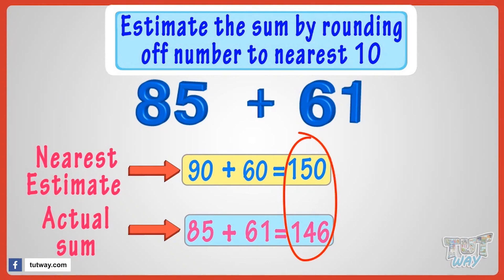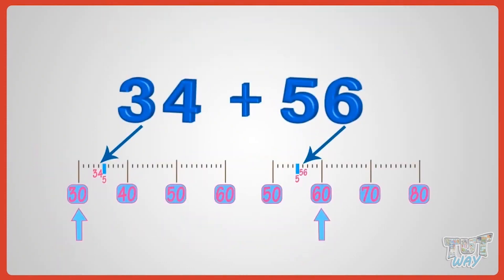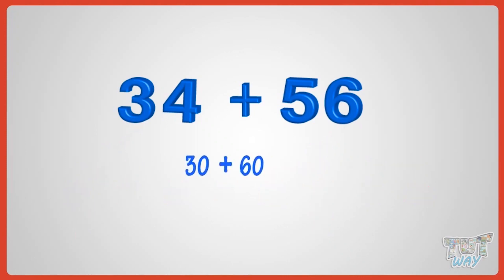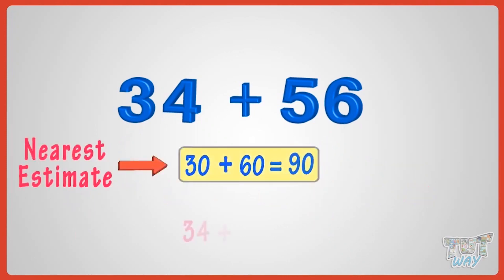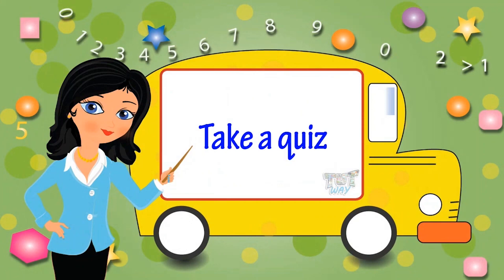So, what have we learned? We have learned to make rough estimates by rounding off the numbers. It helps us in fast calculations when necessary. Now, you may go ahead and take a quiz to practice more. Bye-bye!